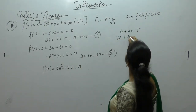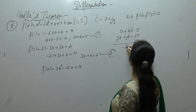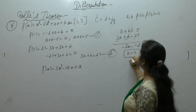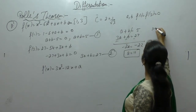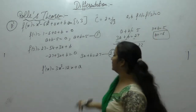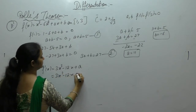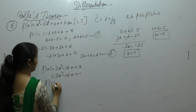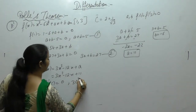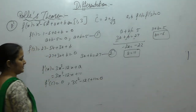Subtracting the first equation from the second: (3a + b) - (a + b) = 27 - 5, giving 2a = 22, so a = 11. Substituting back: 11 + b = 5, so b = -6. Now f'(c) = 0 when Rolle's theorem is satisfied, giving 3c² - 12c + 11 = 0.